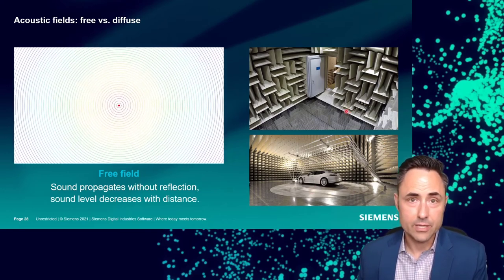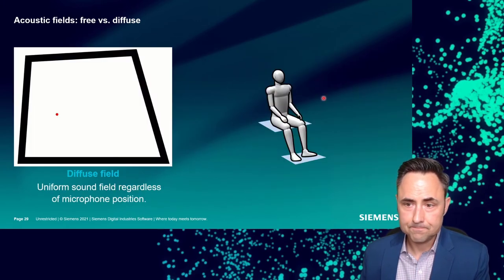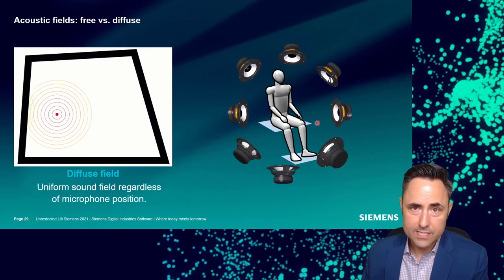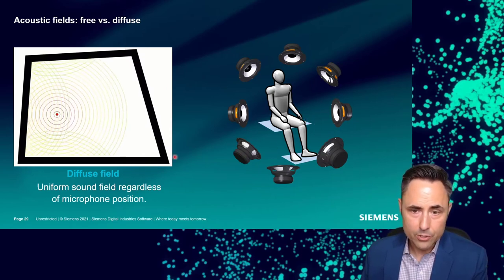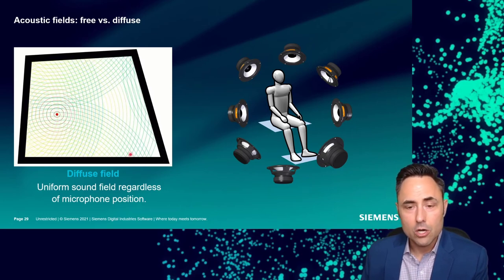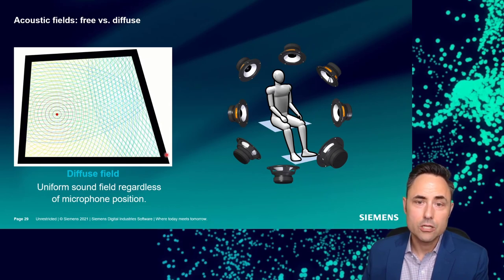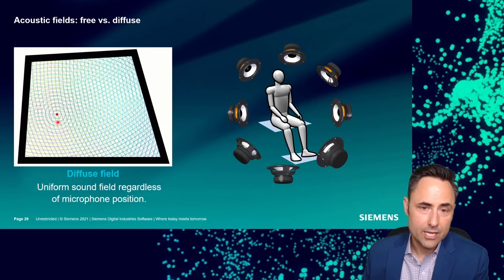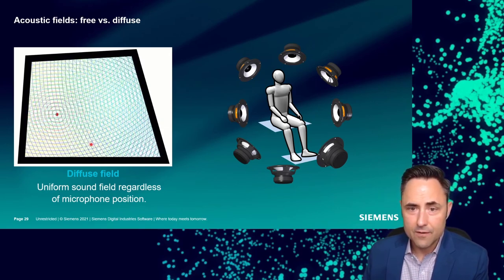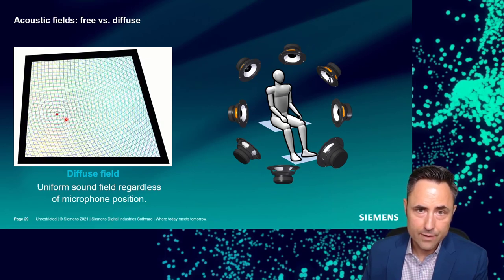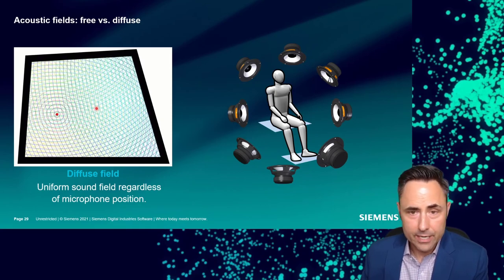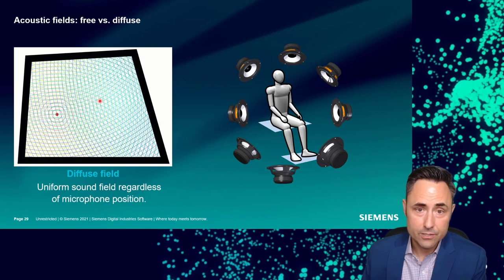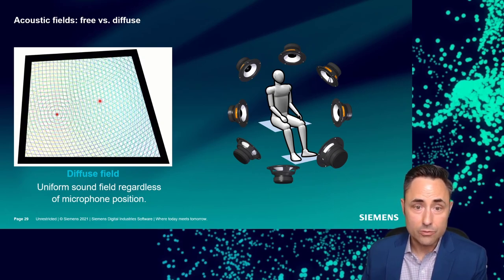The opposite of the free field is the diffuse field, where sound comes from all directions at once. In a laboratory, this is simulated with a reverb chamber: highly reflective, massive walls that bounce sound as many times as possible. A microphone in a perfectly diffuse field measures the same pressure regardless of its orientation or location in the room. So: free field means no reflections; diffuse field means all reflections.